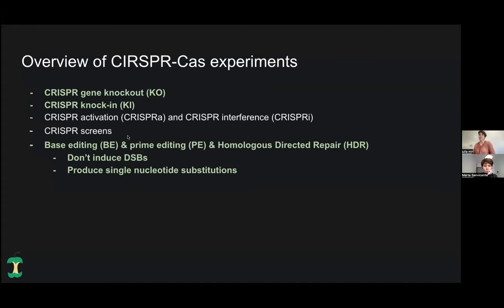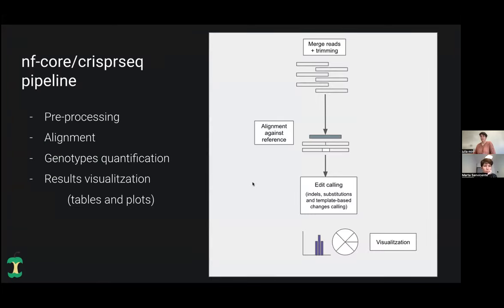More recently, there are these other two technologies called base editing and prime editing, which are done not by a double strand break, but only with a nick. Those are more precise because they can produce base substitutions of only one base. That's the overview of all these CRISPR-Cas experiments. Apart from that, we can also have CRISPR screens, which consists of a library of different gRNAs targeting lots of different genes, and then we can perform a screening. Finally, if we couple with a Cas protein that's inactive and doesn't cut the DNA and only affects the expression of the genes, we get CRISPR activation or CRISPR interference. Our pipeline CRISPR-SEC can analyze gene knockouts, gene knock-ins, and also base editing or prime editing experiments.